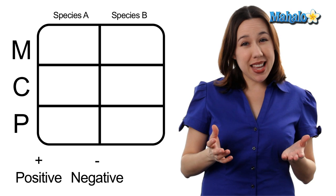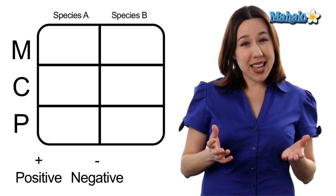If the interaction is positive for that species, you're going to put a plus. If it's negative, you're going to put a minus. And if it's neutral, you're going to put a zero.